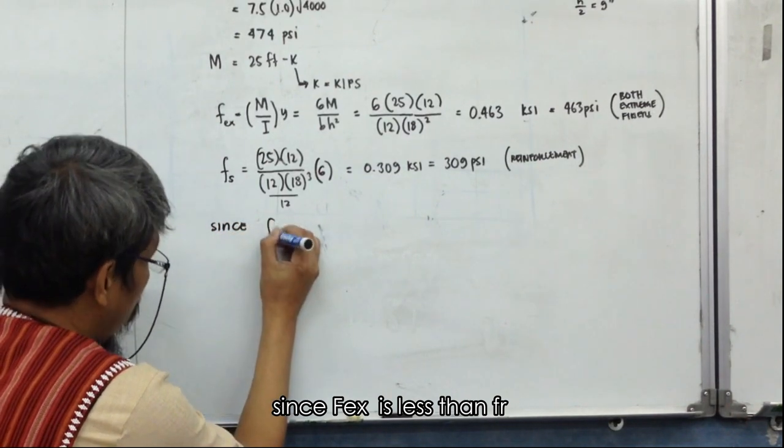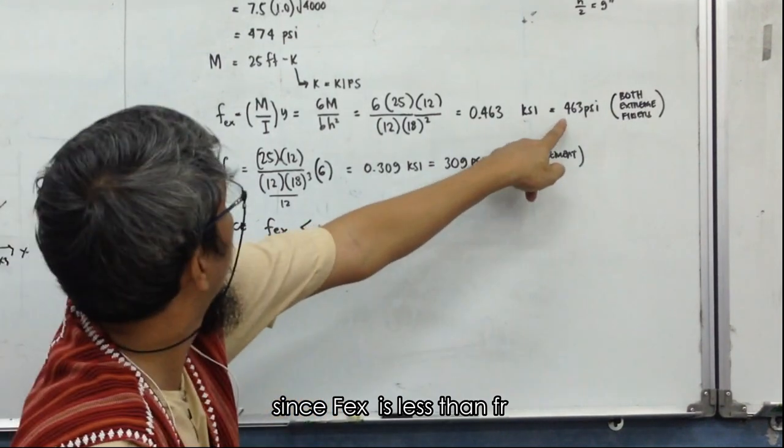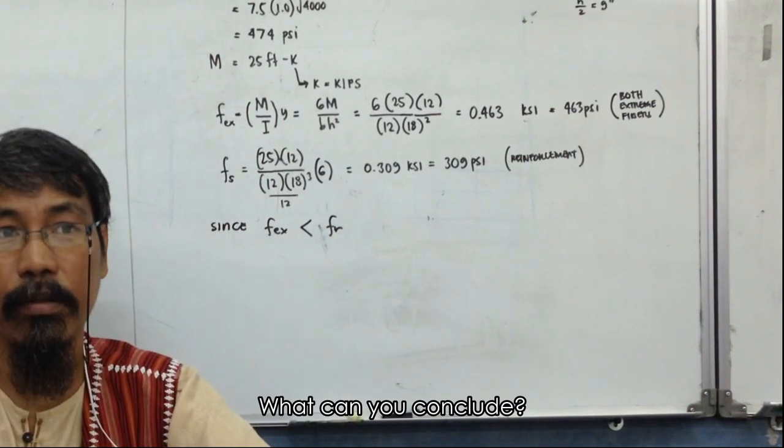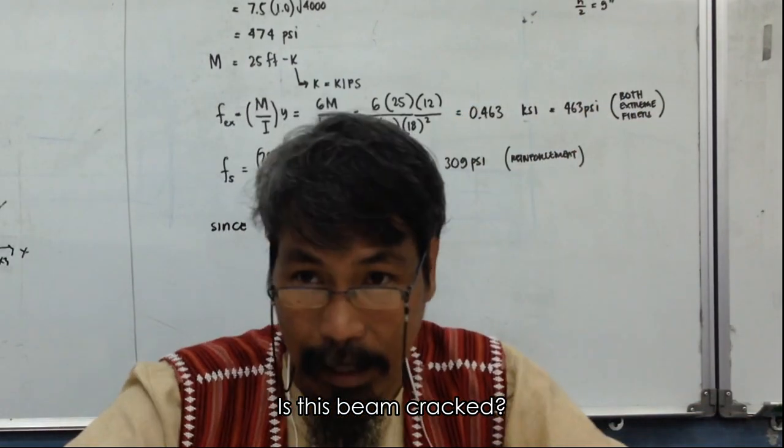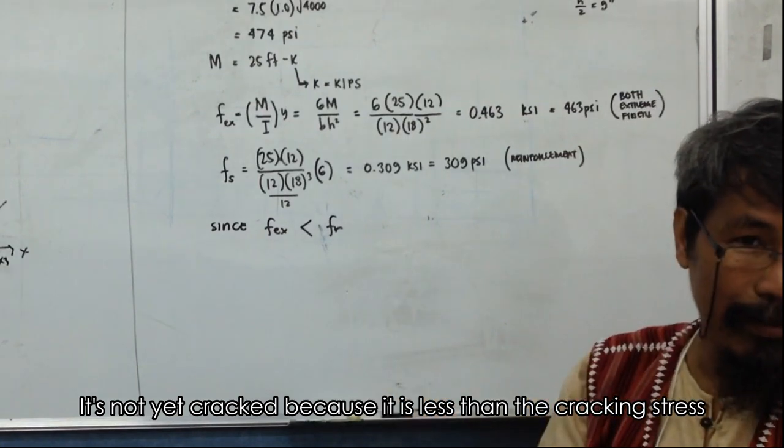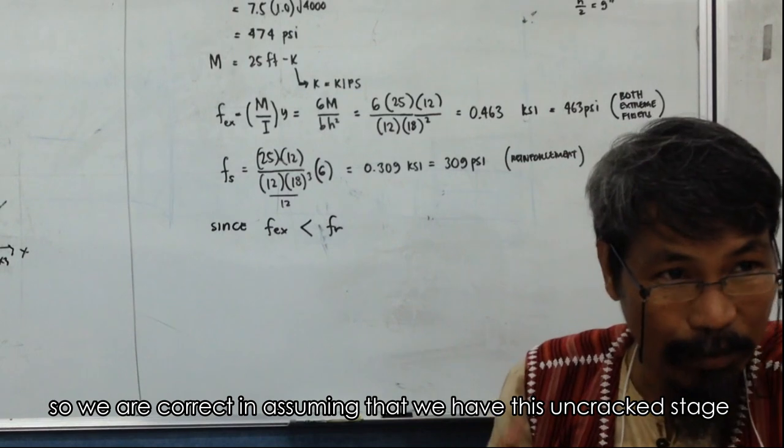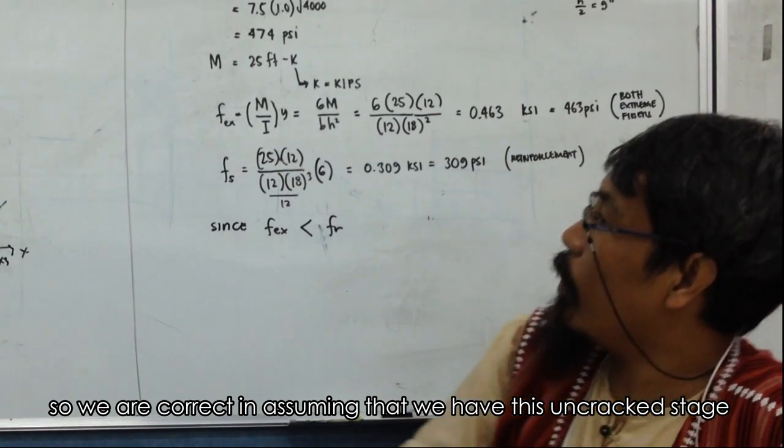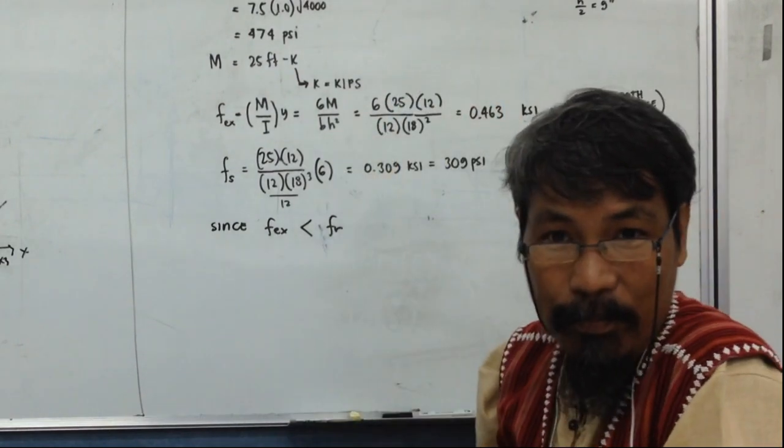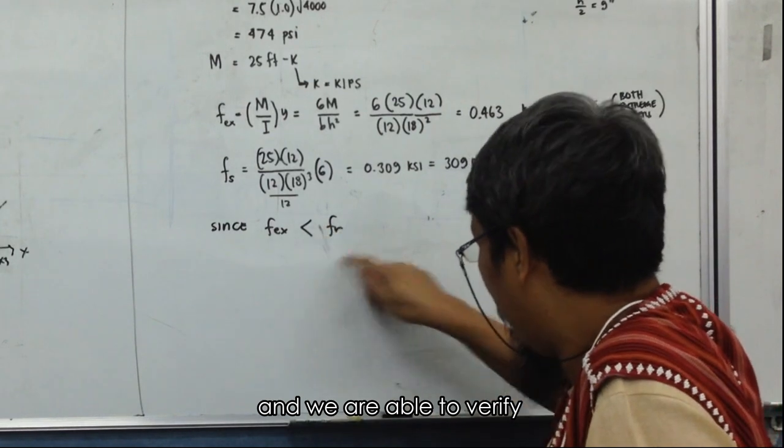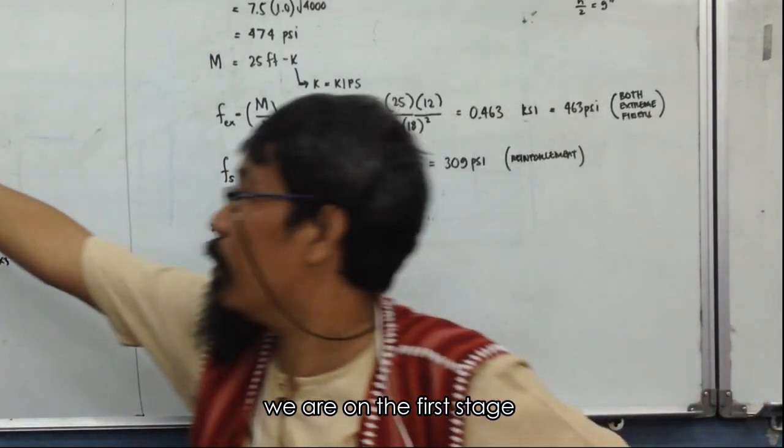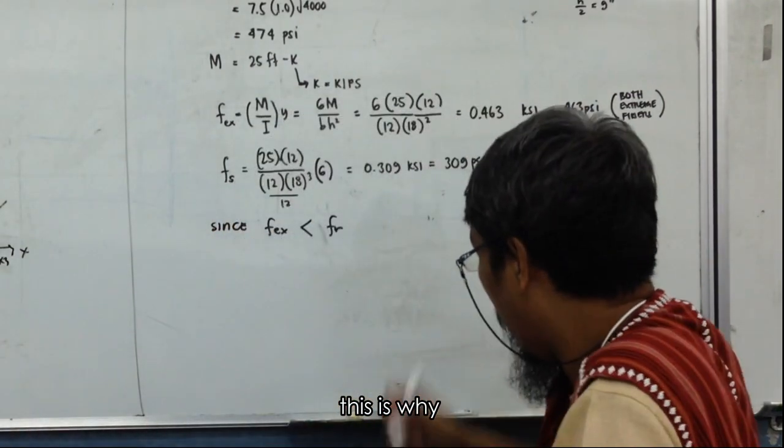Since M_EF is less than M_R, what can you conclude? Is this big crack? No, not cracked because it is less than the cracking. That's nice, not cracked. So we are correct, we are correct in assuming that we have this uncracked stage. So actually that is given by the condition of the problem, and that is what we are able to verify. We are able to verify that.